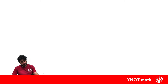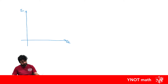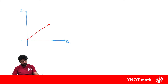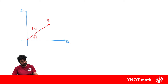If we draw up our Argand diagram, we get our real axis and our imaginary axis. We know a complex number can be represented in Cartesian form or mod-arg form, and we're going to be interested in mod-arg form. If we have some complex number z, its distance from the origin is its modulus, and the angle theta it makes with the positive real axis is its argument.